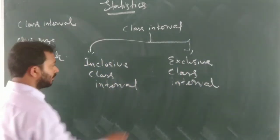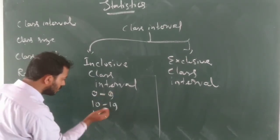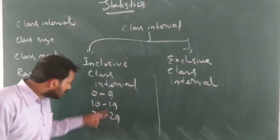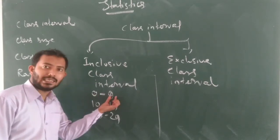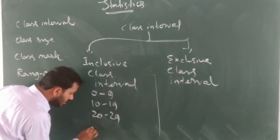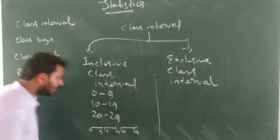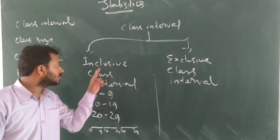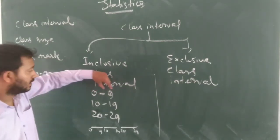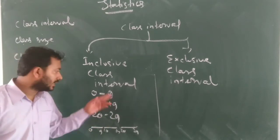Let's see the difference between these two. For example, if we take 0 to 9, 10 to 19, 22 to 29 — you can see there is a gap between intervals. If we represent it on a line segment, 0 to 9, then a gap, 10 to 19, then a gap, 22 to 29. So this is a discrete form, meaning inclusive class interval is in discrete form. Here, the lower limit and upper limit are both included. If any student's marks are 9, it will be included here.